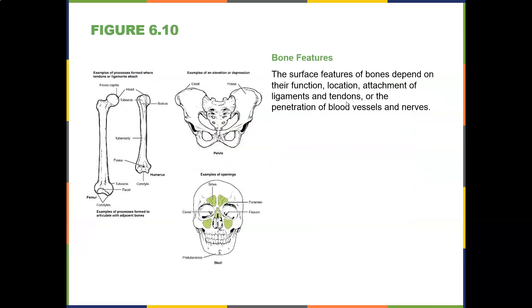The surface features of bones depend on their function, location, attachment of ligaments and tendons, or penetration of blood vessels and nerves. As we cover the axial and appendicular skeleton, we'll learn all the parts of the bones — what the head, tuberosities, fossa, crest, canal, opening, and foramen mean.